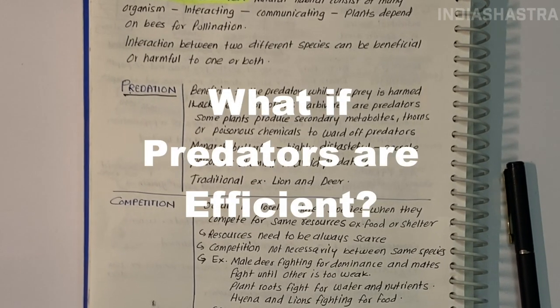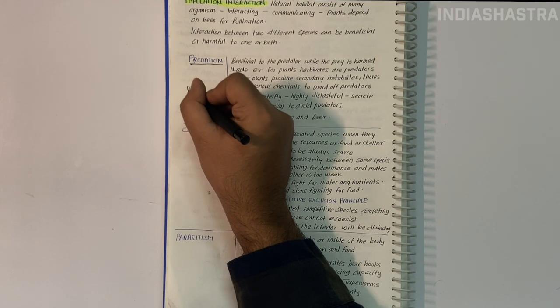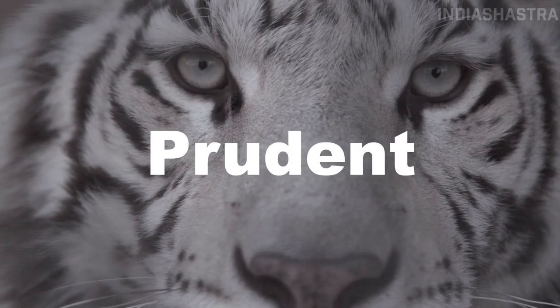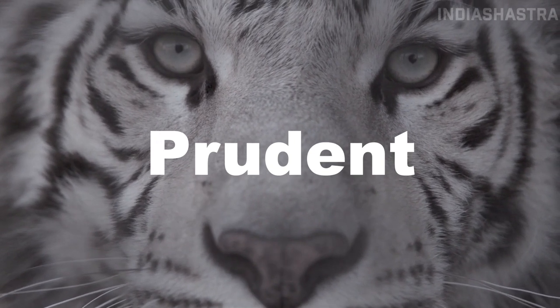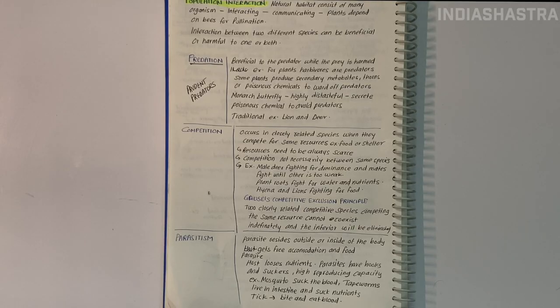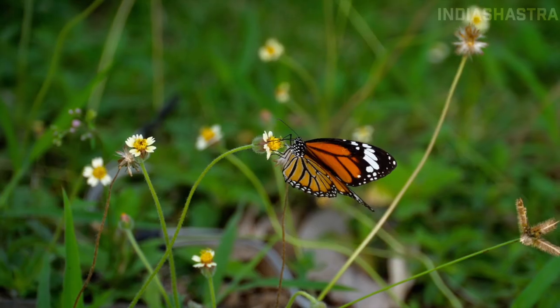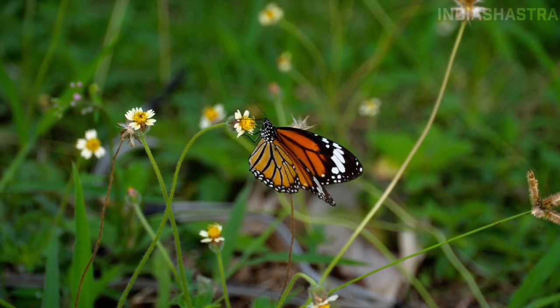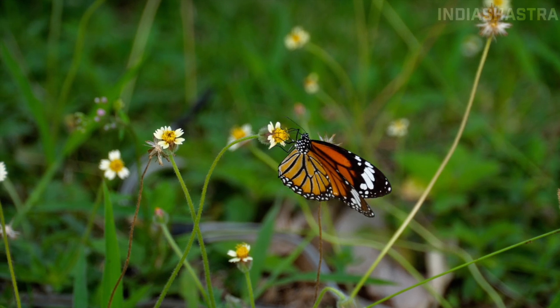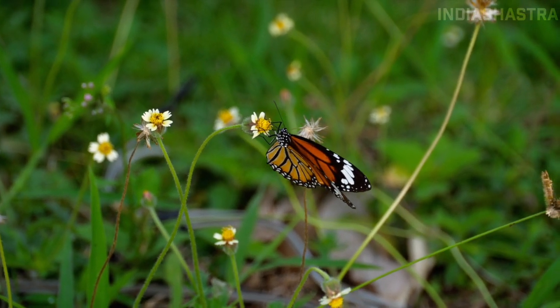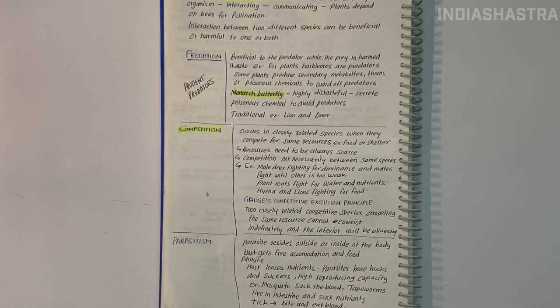Prickly pear cactus introduced into Australia in early 1920s caused havoc by spreading rapidly into millions of hectares. Finally, the invasive cactus was controlled after introducing a cactus-feeding predator moth from its natural habitat. What if predators are so efficient that prey species got extinct? Predators would also become extinct from lack of food. But actual predators in nature are prudent, not just efficient.